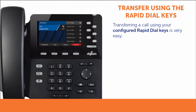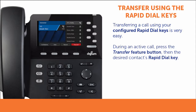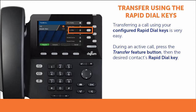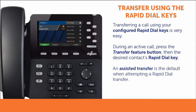If you have Rapid Dial keys set up with your often used phone numbers, then transferring a call is very easy. During an active call, press the Transfer Feature button to start the transfer, then push the Rapid Dial key of the contact to whom you wish to transfer. By default, the system will attempt an assisted transfer.